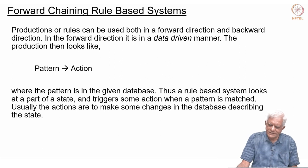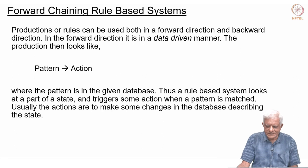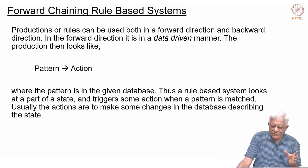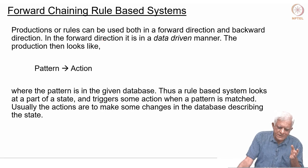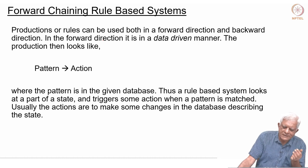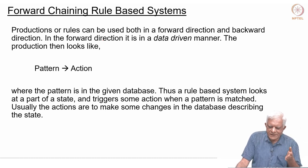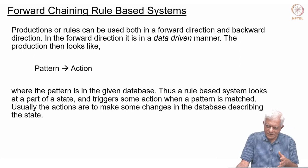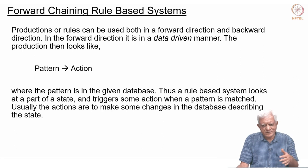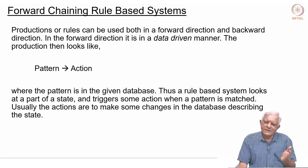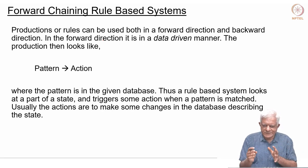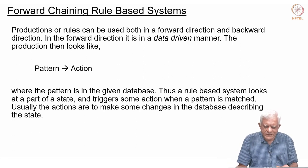Rule-based systems were also built using backward chaining, and we will look at a language called Prolog which does backward chaining. In the forward chaining context, a production looks like a pattern followed by an action. The pattern is matched in the given database, and the action could be to add or even delete a statement. Deletion leads to a slightly more complex logic called non-monotonic logic — where you can prove something and then delete it, so the set of true statements can go up and down.